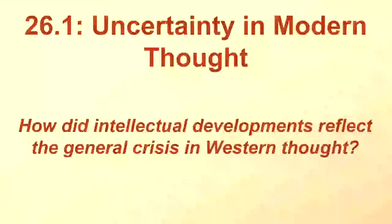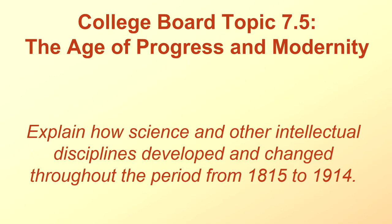This is Lesson 26.1, Uncertainty in Modern Thought. How did intellectual developments reflect the general crisis in Western thought? College Board Topic 7.5, The Age of Progress and Modernity. Explain how science and other intellectual disciplines developed and changed throughout the period from 1815 to 1914 — and we're actually going to go way beyond 1914 in this particular lesson.